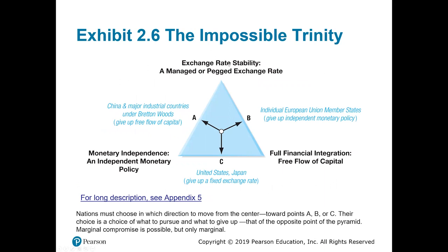There are three corners of this triangle representing the desired properties of an ideal currency: a stable or pegged exchange rate on one side, an independent monetary policy on the left, and full financial integration — where capital is free to move from one country to another — on the right.